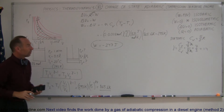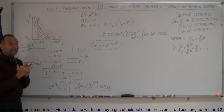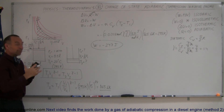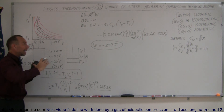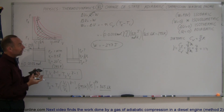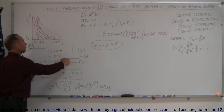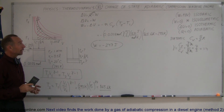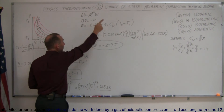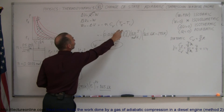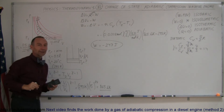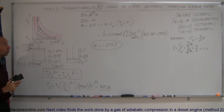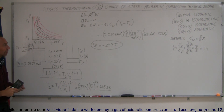Why is the answer negative? Because the gas is being compressed. Gas can only do positive work when it expands; when compressed, we're doing work on the gas. So the answer is negative 247 joules — that's the work required to compress the gas to 1/15th of its original volume. In the next video, we'll use pressure and volume to solve the same problem and verify we get the same answer.